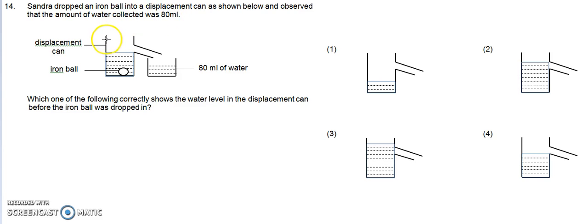So how a displacement can works is that it has water in it, and then you drop in an object and water overflows from the displacement can into another container. The amount of water collected is actually the volume of the object that you place inside.